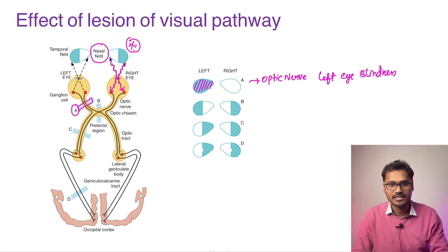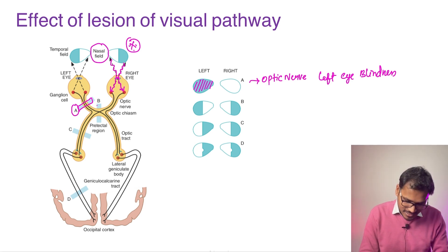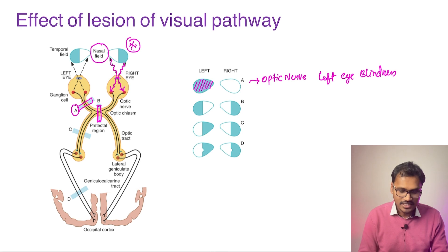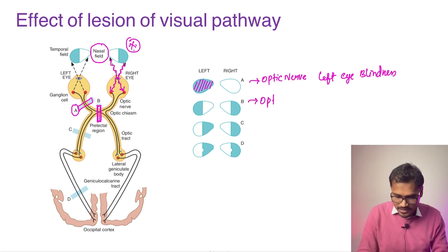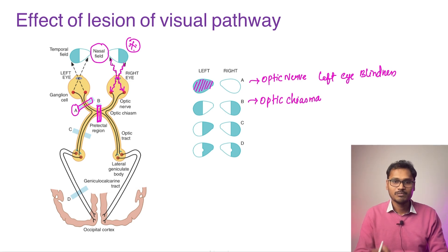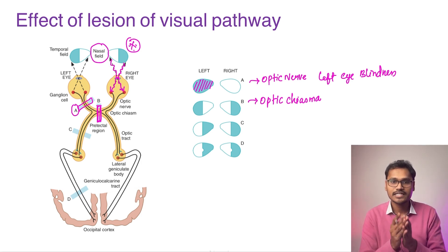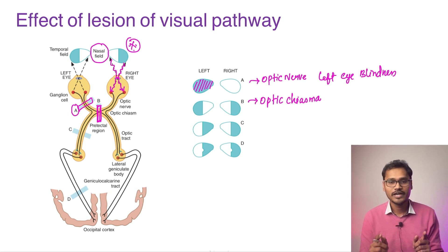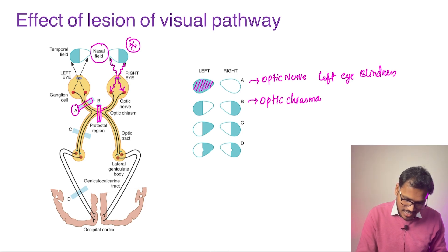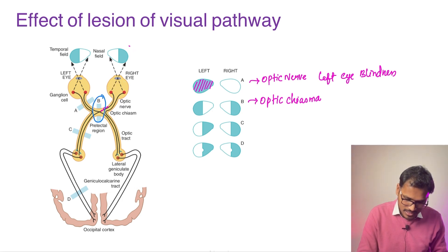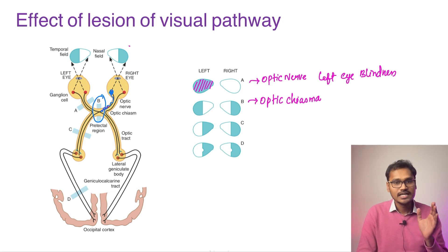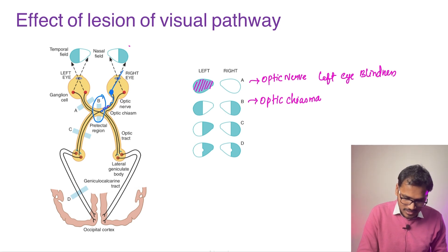Lesion B is at the level of the optic chiasma. This is very important. When the chiasma is cut, the nasal fibers — which are crossing — get severed. Tracking back, the nasal fibers at the chiasma correspond to the temporal retina. So the temporal side of the right eye's field is lost. Similarly, the nasal fibers of the left eye are also cut, so the temporal field of the left eye is also lost.